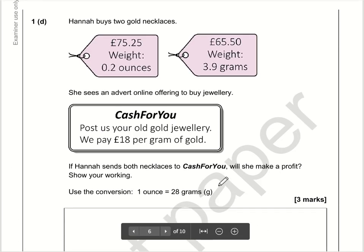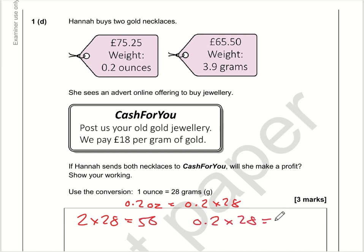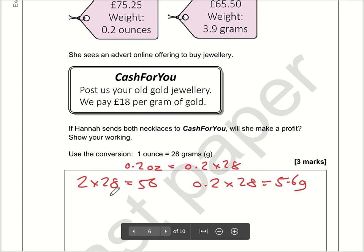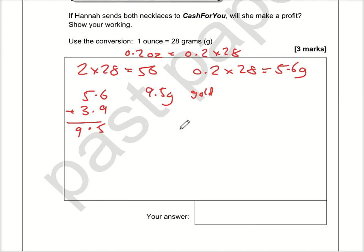Part d: the first thing I'm going to do is convert 0.2 ounces into grams. We know that one ounce is 28 grams, so 0.2 ounces is 0.2 times 28. Two times 28 is 56, so 0.2 times 28 is 5.6 grams. The total weight of the gold is 5.6 plus 3.9; 6 plus 9 is 15, carry the one — so that is 9.5 grams of gold.